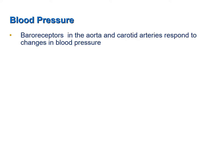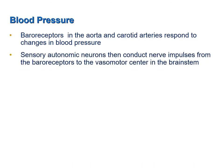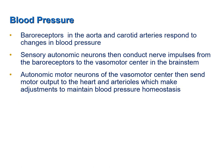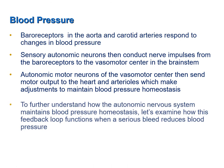Baroreceptors — these are pressure receptors — in the aorta and carotid arteries respond to changes in blood pressure. Sensory autonomic neurons then conduct nerve impulses from the baroreceptors to the vasomotor center of the brainstem. Autonomic motor neurons of the vasomotor center then send motor output to the heart and arterioles, which make adjustments to maintain blood pressure homeostasis.